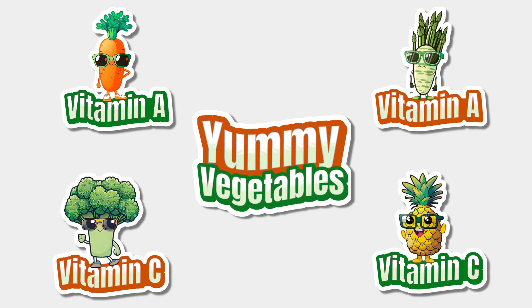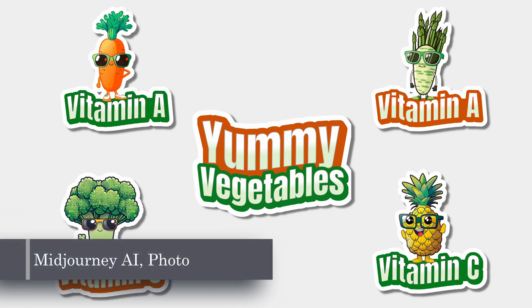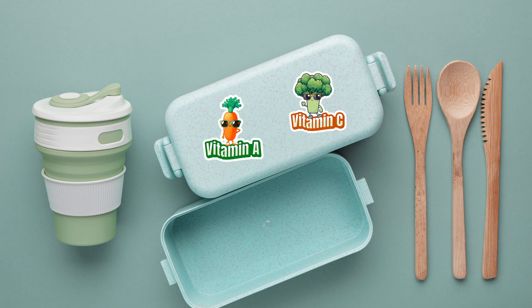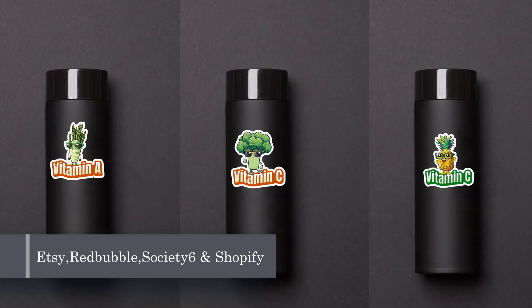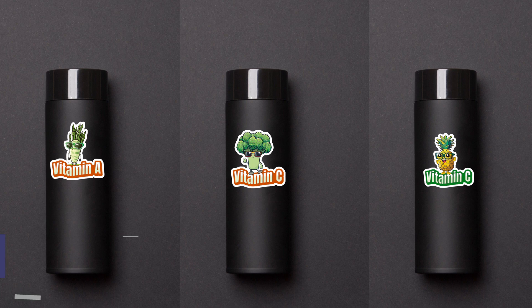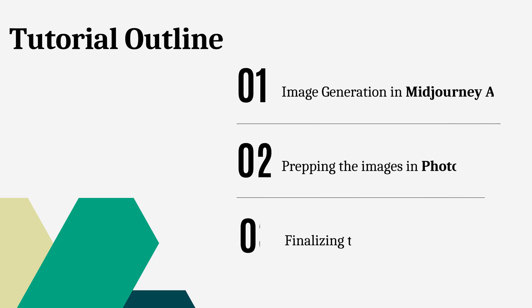Hi and welcome to the channel. Today I'll be showing you how to create unique printable stickers with MidJourney AI, Photopea and Kato. Stickers are very fun to create and above all, they are hot-selling items on platforms like Etsy, Redbubble, Society6 and even on custom Shopify stores. I've seen businesses built solely on printable stickers and they are crushing it. So in this video I'll be covering how to create those images in MidJourney, then we're prepping the images in Photopea and finalizing our images in Kato by adding text, style and making our stickers stand out. Let's get started.